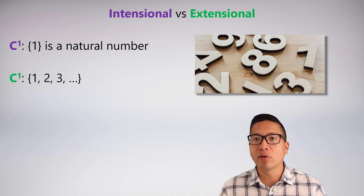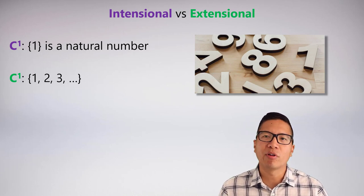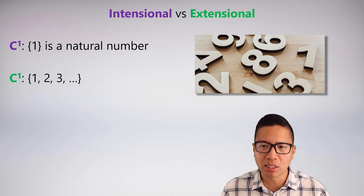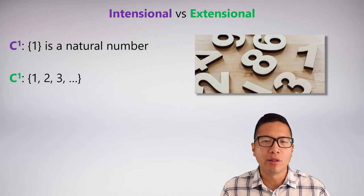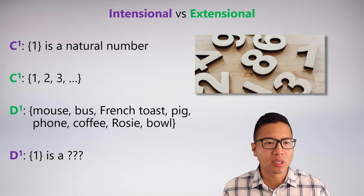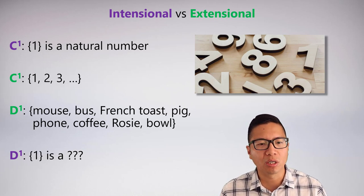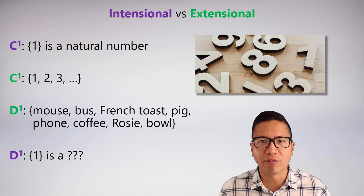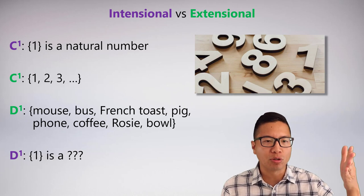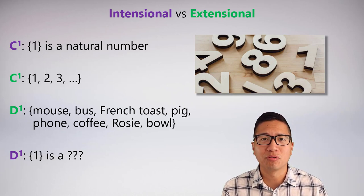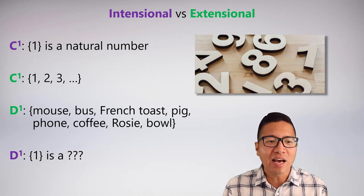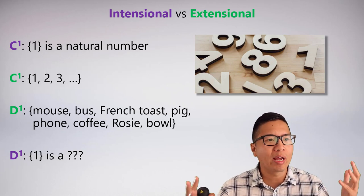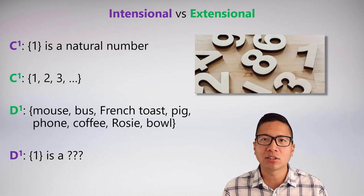One advantage of intentional over extensional is avoiding dot-dot-dot gesturing for infinite sets. 'C is a natural number' is clean intentionally, but extensionally requires dot-dot-dot. However, extensional can actually be better in some cases: the set {mouse, bus, french toast, pig, phone, coffee, rosy, bowl} — a seemingly random collection of things I saw while writing this lecture — would be very difficult to define intentionally. Finding the right intentional definition for a random extensional collection can be difficult, and in that case extensional has the advantage.